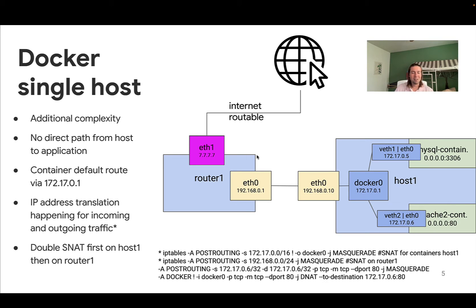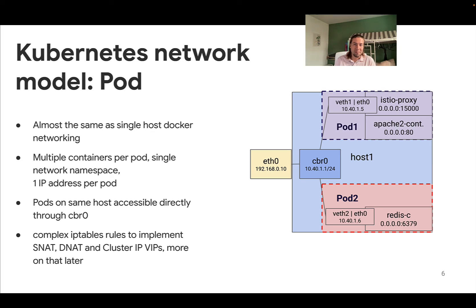That's the complexity added by Docker. Now let's add Kubernetes. At a high level it is almost the same as the single-host Docker networking setup, with one key difference: Kubernetes has the pod concept. A pod can have multiple containers sharing the same network namespace, so they share a single IP address and are attached to a single network interface pair that connects them to the host. This pod is then connected to the Linux bridge on host 1. Pods on the same host are accessible directly through this bridge without leaving the host.